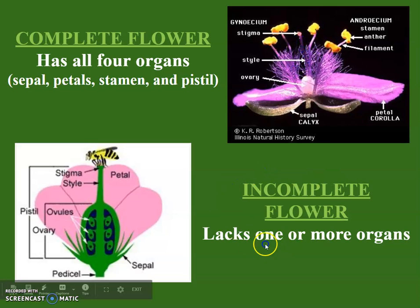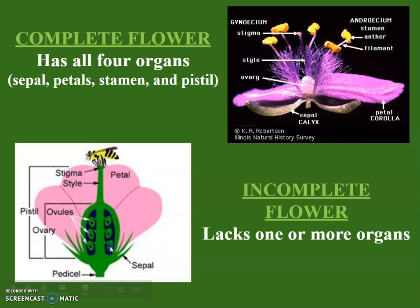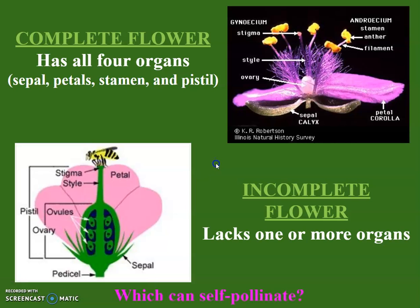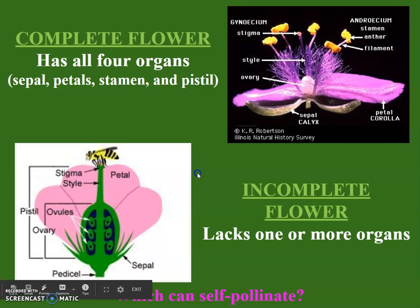An incomplete flower lacks one of those organs. This flower has the sepal, the pistil with the stigma and style, but it does not have the stamen, so it is an incomplete flower. The complete flower can self-pollinate because it has both the stamen and the pistil, so pollen can go straight to the stigma. The incomplete flower cannot reproduce on its own because it is missing the male reproductive parts.